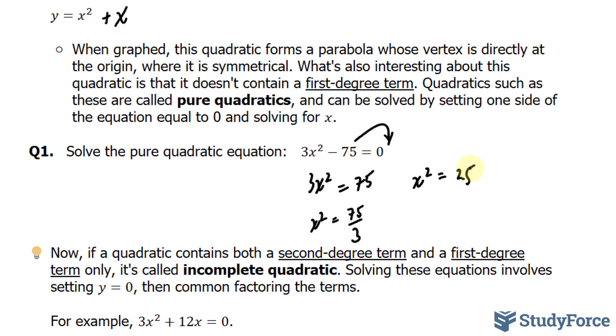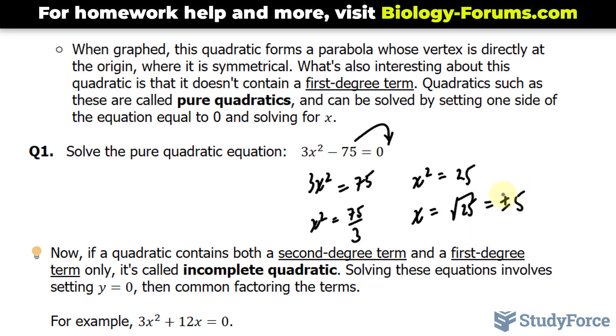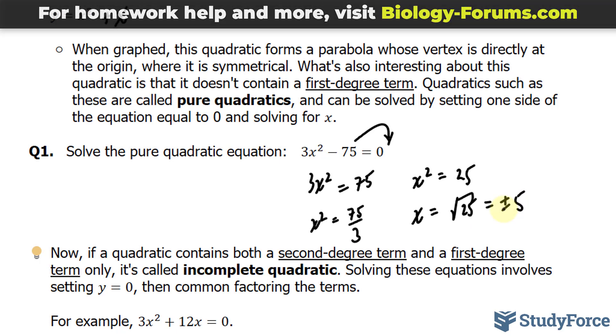So if we square root both sides right now to get this x isolated, I'll end up with the square root of 25. The square root of 25 is equal to plus minus 5. It's important that you include plus minus 5 because, remember, we are dealing with quadratics.